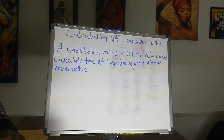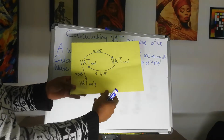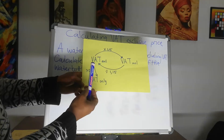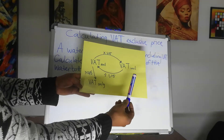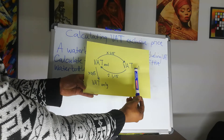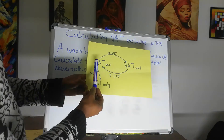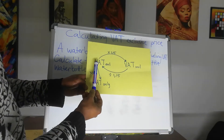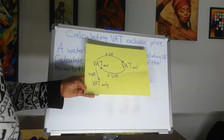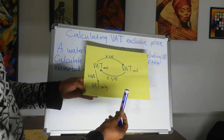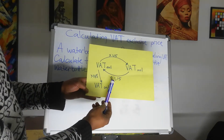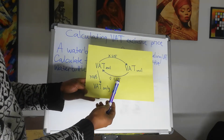Now, here we have a model. So we are going to say we are going from VAT inclusive to VAT exclusive. Therefore, we are taking the VAT out of the price. And to do that, we are going to divide by 1.15.